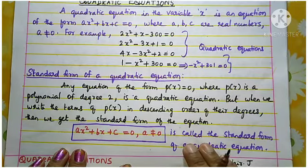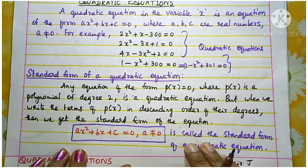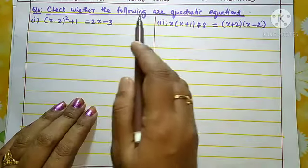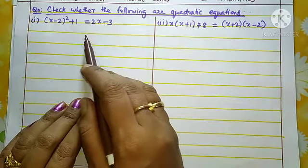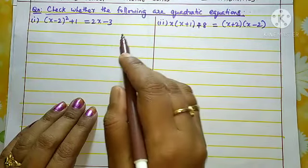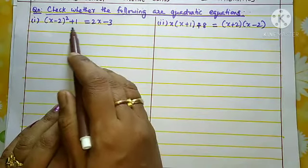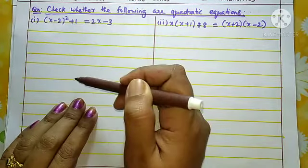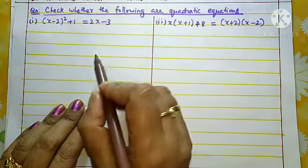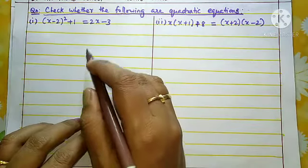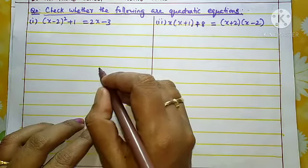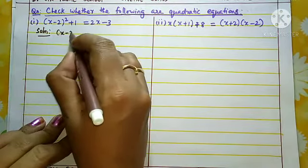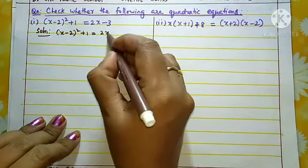Now we will see some examples: check whether the following are quadratic equations. We are given an equation and we need to verify whether it is a quadratic equation or not. We need to simplify it and bring it to the standard form. The first problem is: x minus 2, the whole square, plus 1 equal to 2x minus 3.